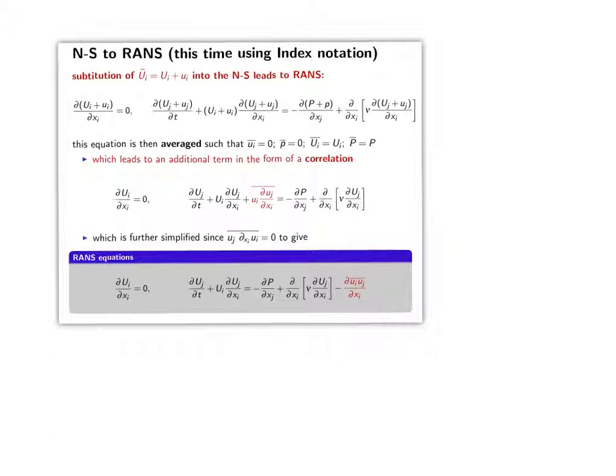So recall, if you start off with your instantaneous Navier-Stokes equations and you make the substitution of instantaneous is equal to the mean plus the fluctuating into your Navier-Stokes equations, and then you average.